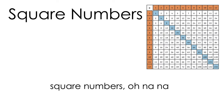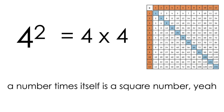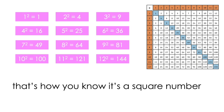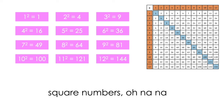ooh na na. The power of two means a square number, ooh na na. A number times itself is a square number, yeah. That's how you know it's a square number, you know it's a square number. Square numbers,